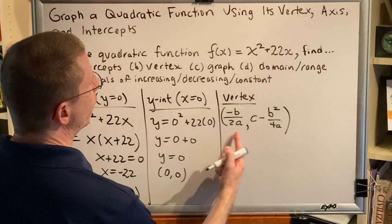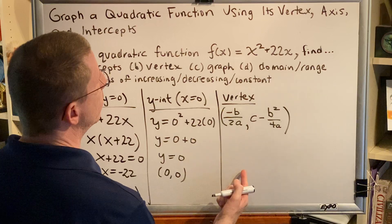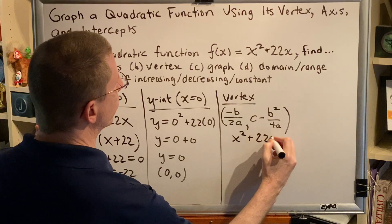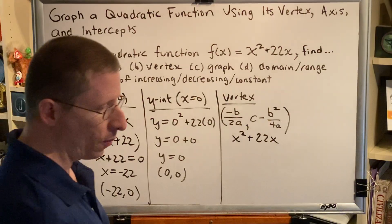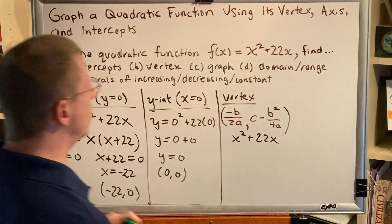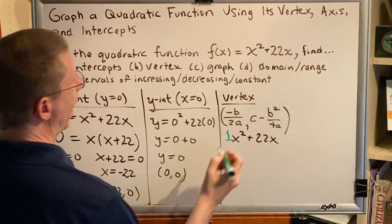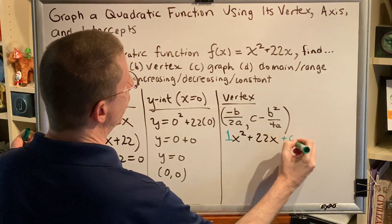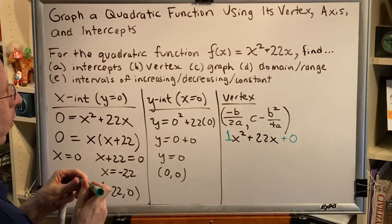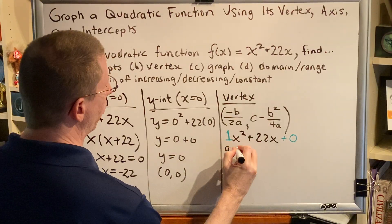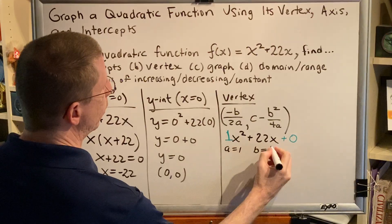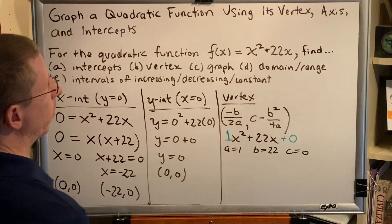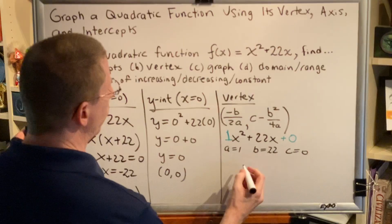All right, for our particular problem, we need to identify the coefficients a, b, and c. And we look up here at our function definition, which is x² + 22x. Now, this x² doesn't have a number written, but there is a hidden understood 1 as the coefficient. And even though there is no constant term here, there's a hidden understood +0. And from this, we learn that a = 1, b = 22, c = 0. Once you know the values of a, b, and c, you can plug them into your formula, and that will give you your vertex.